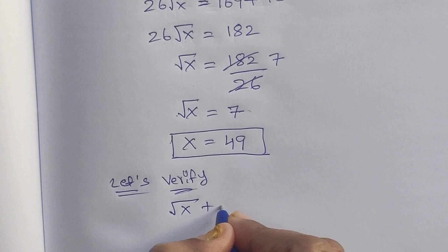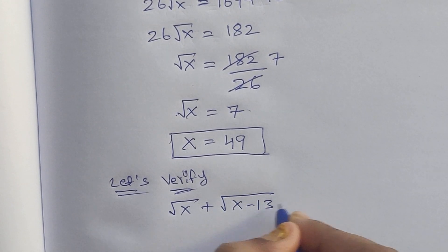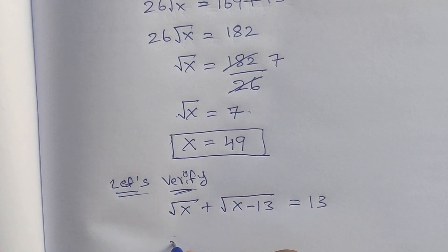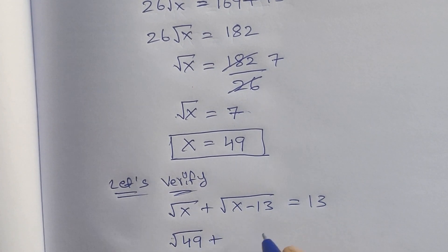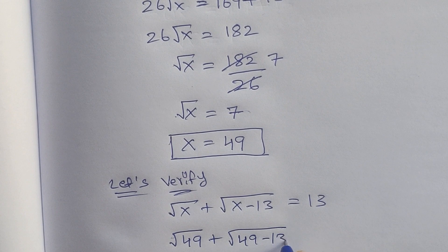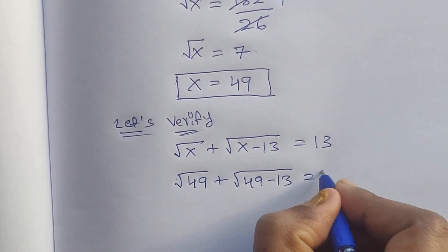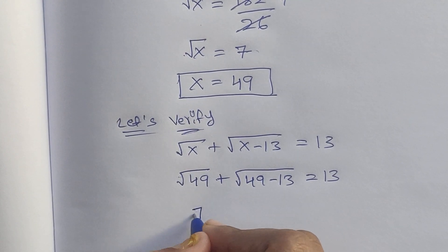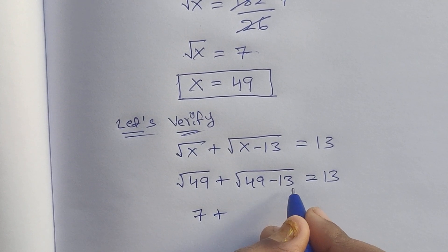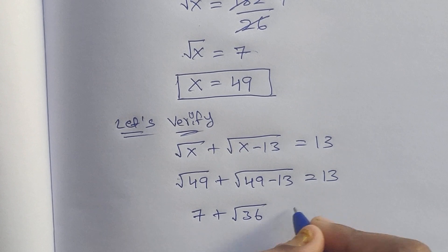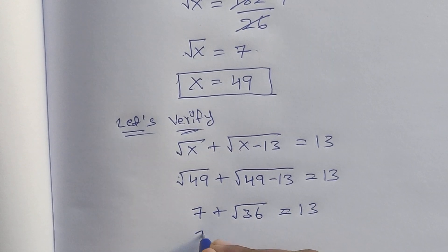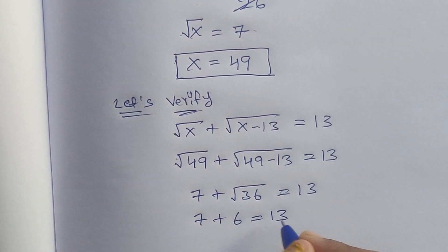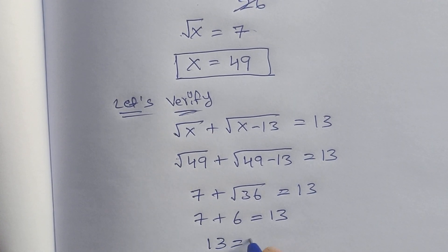Verification: √x + √(x - 13) = 13 with x = 49. √49 + √(49 - 13) = 7 + √36 = 7 + 6 = 13. And 13 = 13. ✓